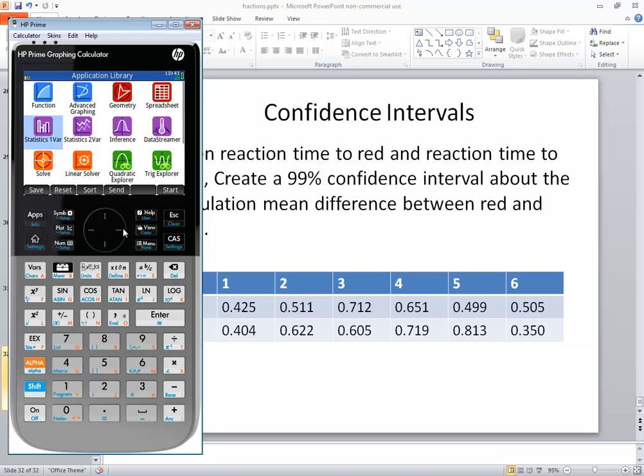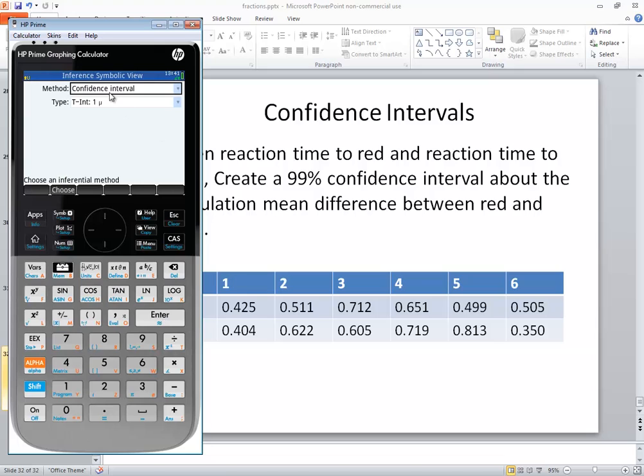I'll press my apps. And I'll go to inference. Press enter. And we want confidence interval. So if it isn't already selected, you press enter. You highlight confidence interval, and then you press enter. And go down to type and press enter. The one we want is the tint1mu. That's population mean. And you may have to down arrow to get it down to there. Once you've got it highlighted, you just press enter. And then we're going to plot as a graph.